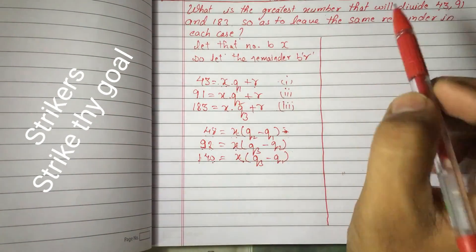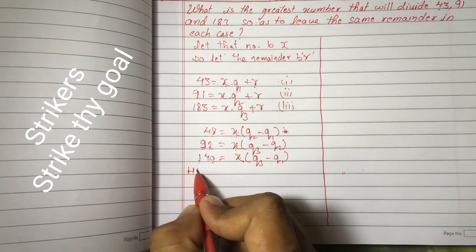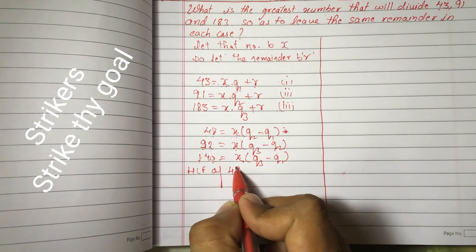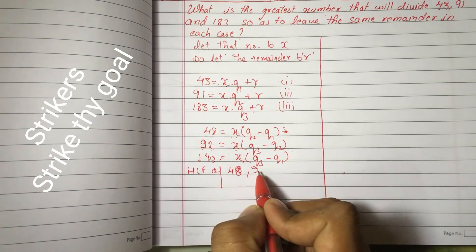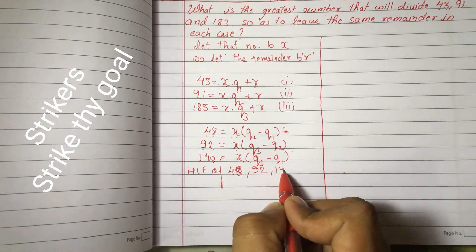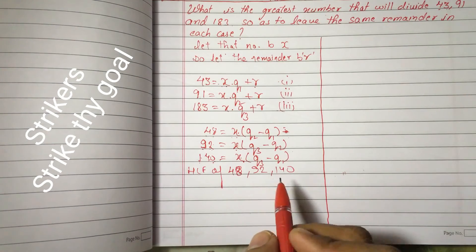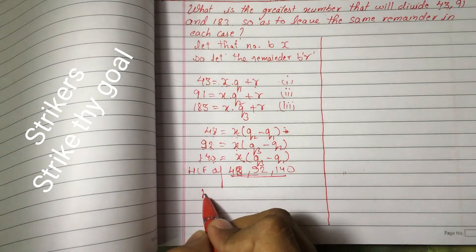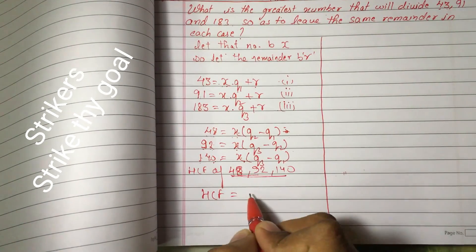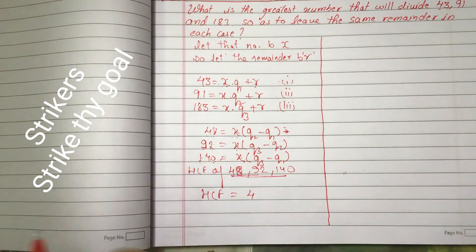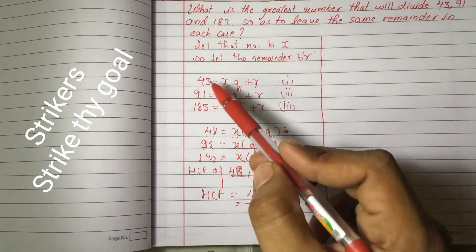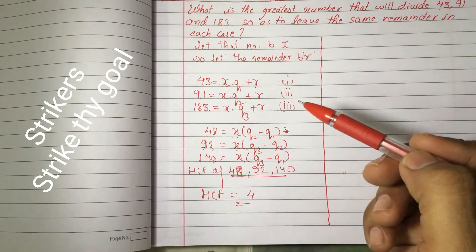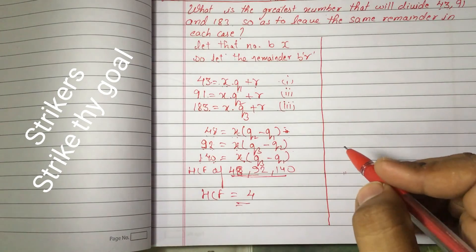Therefore, the HCF of 48, 92, and 140 will be the answer. The HCF equals 4, so 4 is the number which divides 43, 91, and 183 and leaves the same remainder in each case. Thank you.